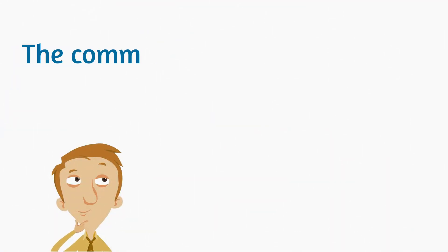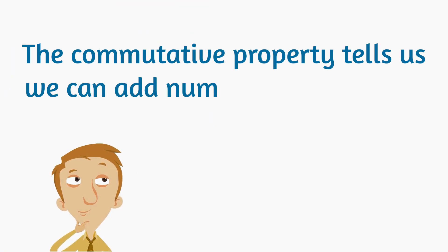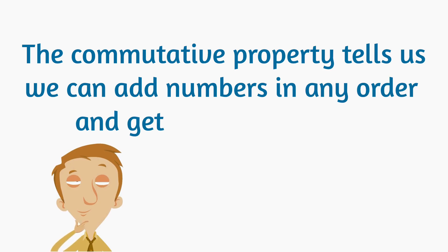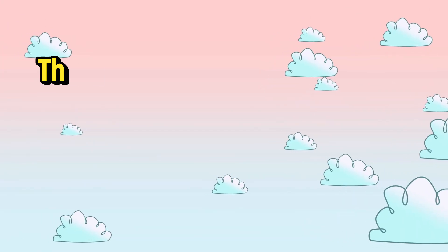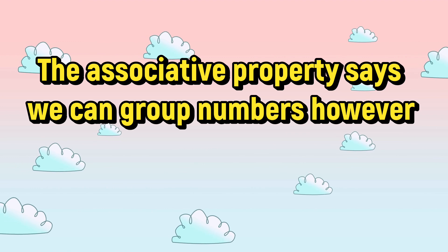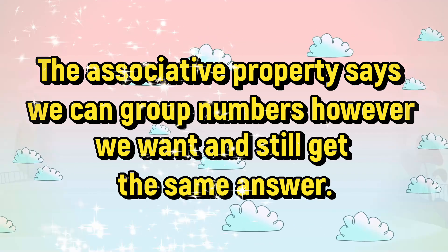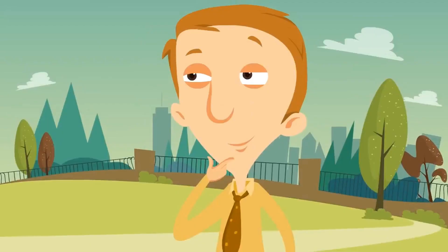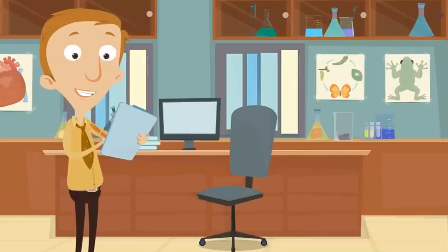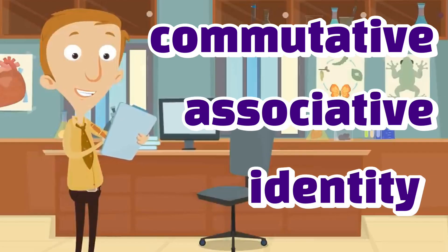So the commutative property tells us we can add numbers in any order and get the same answer. And the associative property says we can group numbers however we want and still get the same answer. But there's a third property we're going to learn about. Remember, the three main properties of addition are commutative, associative, and identity.